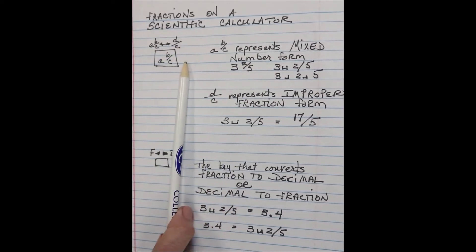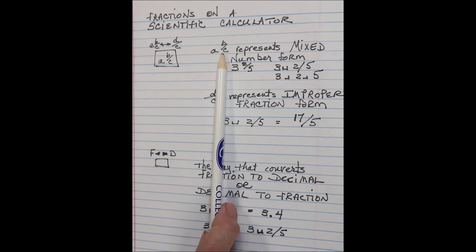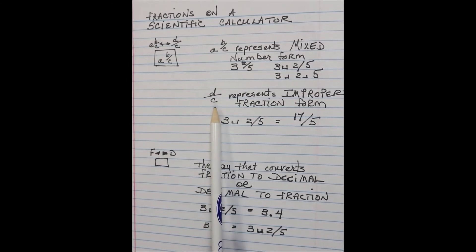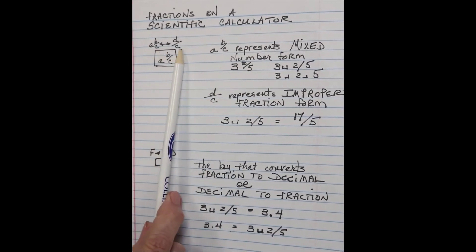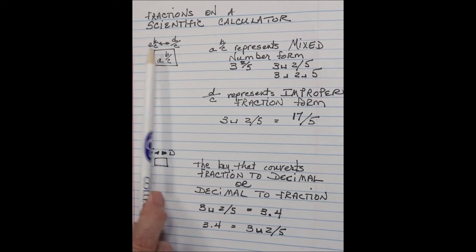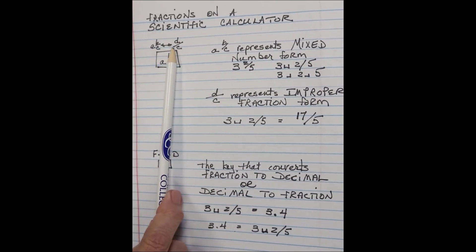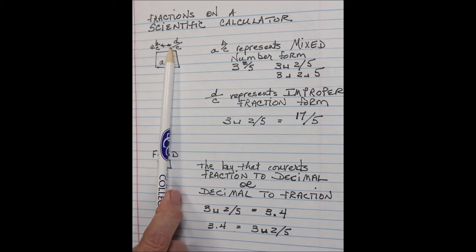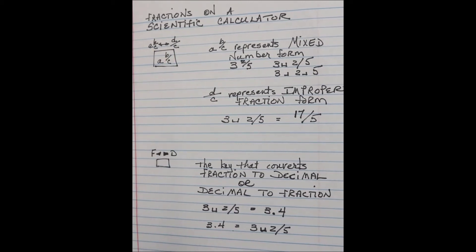So you're going to have AB over C and then D over C, and since this is off the key itself, we're going to do a second function to access that conversion to an improper.